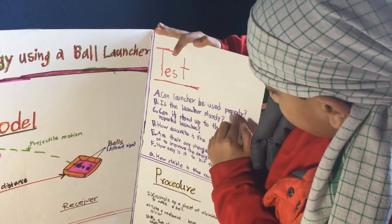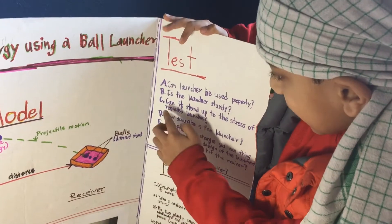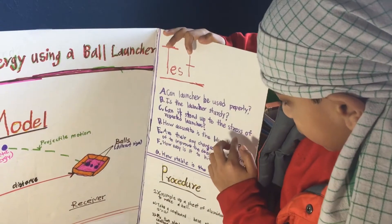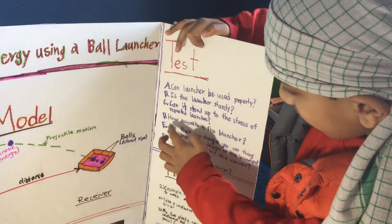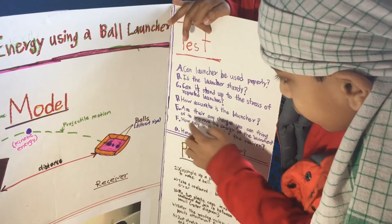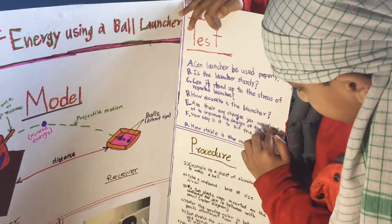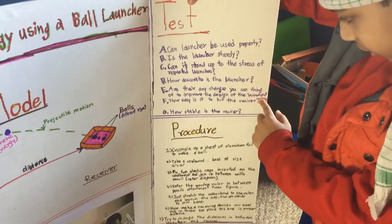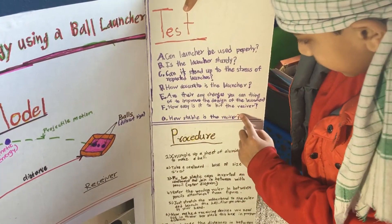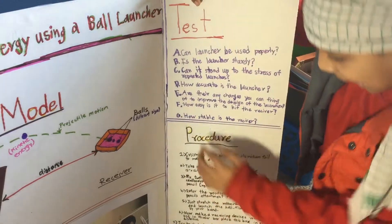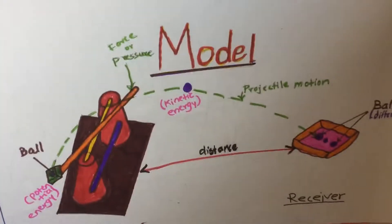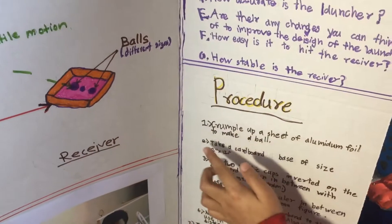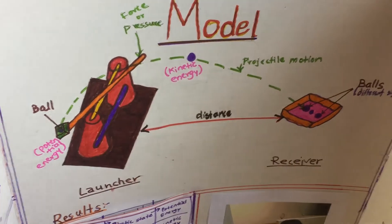The test questions are: Can the launcher be used properly? Is the launcher sturdy — can it stand up to the stress of repeated launches? How accurate is the launcher? Are there any changes to improve the design? How easy is it to hit the receiver? How stable is the receiver? These are all the questions the science project can give you.